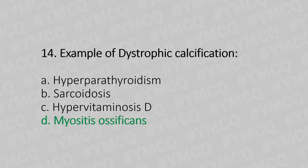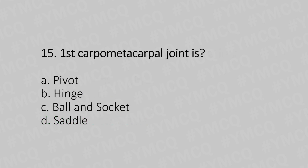Fifteenth question: First carpometacarpal joint is — Option A: pivot joint. Option B: hinge joint. Option C: ball and socket joint. Option D: saddle joint. The answer is Option D, saddle joint.